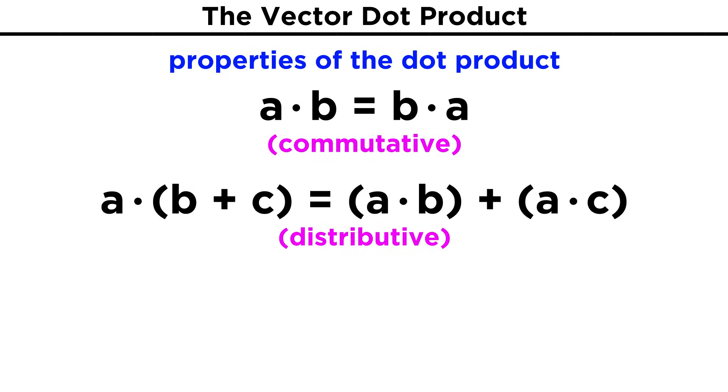The distributive property also holds, and A dot the sum of B and C, or A dot the vector that results from adding B and C, is the same as A dot B plus A dot C.